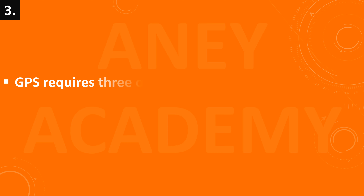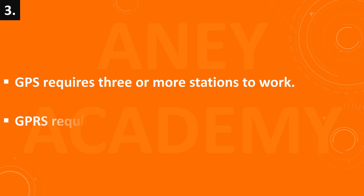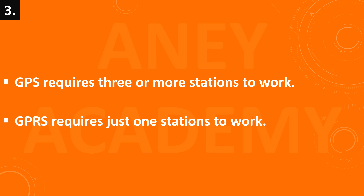GPS requires three or more stations to work. GPS ko kam karne ke liye teen ya teen se adhik stationo ki avashyaktah hoti hai. GPRS requires just one station to work.